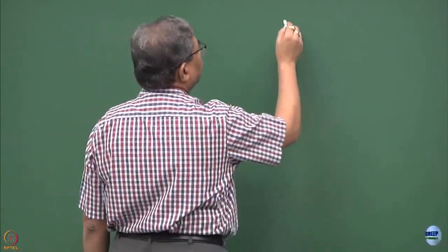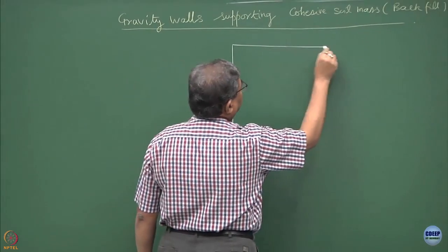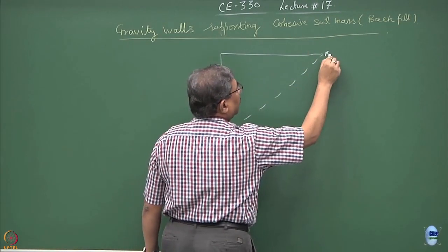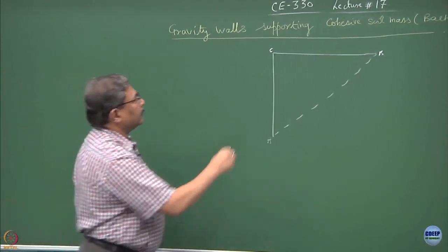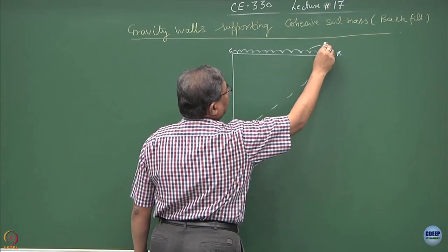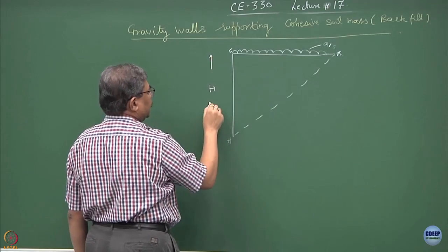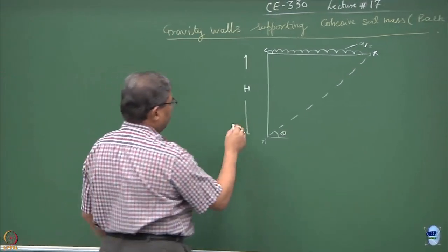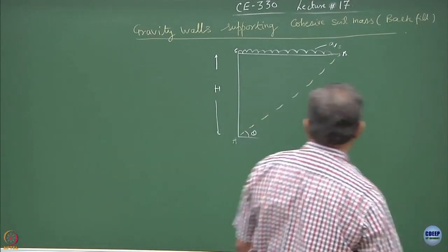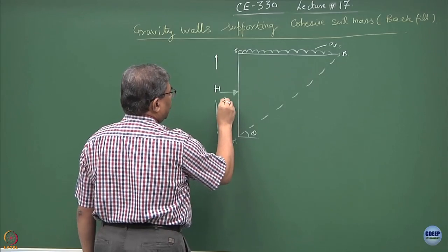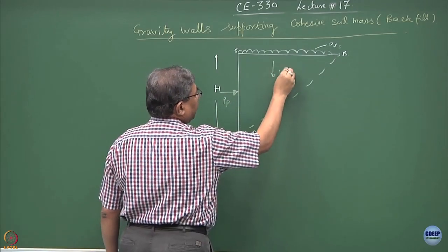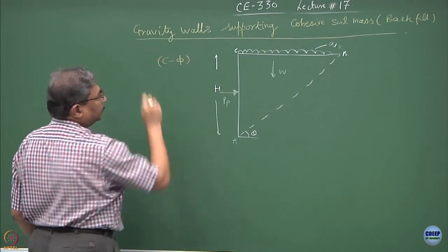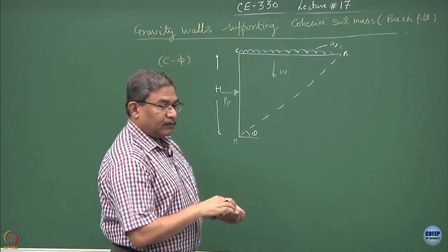And it will be very interesting to see the case of a passive application. If this is the trial wedge and we have all those conditions which we have considered earlier, there is a qs, height of the wall is h, inclination of the slip surface is theta. We are trying to find out the passive earth pressure on the system. This is the w weight and this material happens to be a c-phi material, that is the only difference.